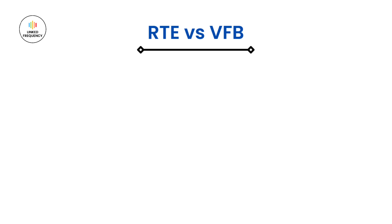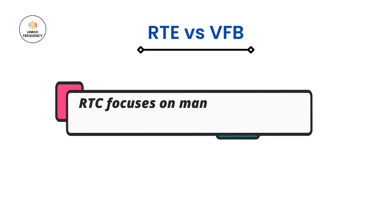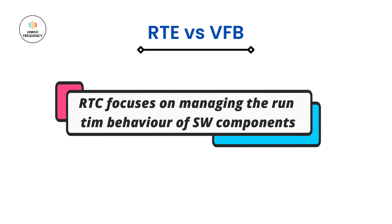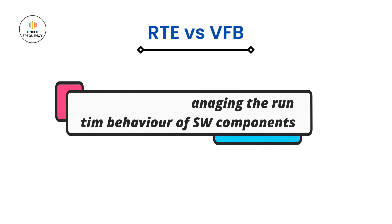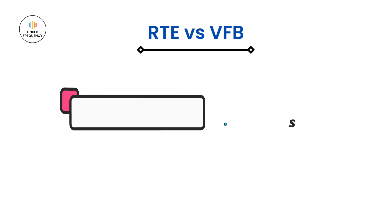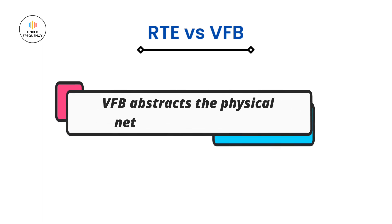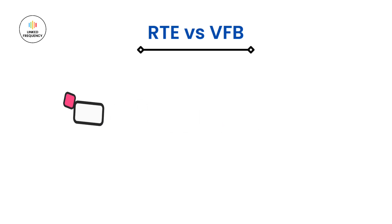Last but not the least, the fourth difference is based on level of abstraction. The RTE focuses on managing the runtime behavior of a software component within an ECU, providing an execution environment and handling intra-ECU communication. Whereas Virtual Functional Bus abstracts the physical communication network and protocols, providing a virtualized communication bus that enables inter-ECU communication and coordination.